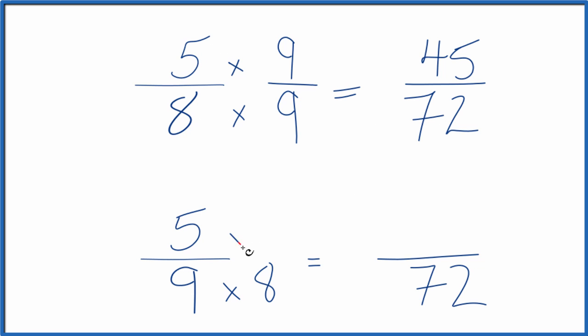Down here we'll multiply by 8 as well, 8 over 8, which is just 1. 5 times 8 is 40. Now we can compare the numerators. We have the same denominator, and when we compare the numerators, 45 is larger than 40.